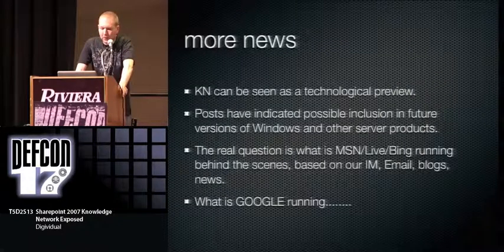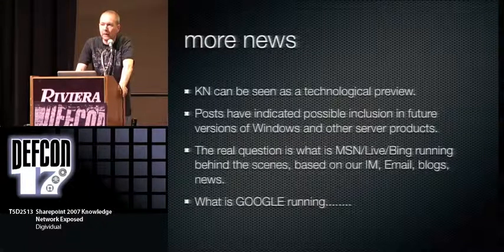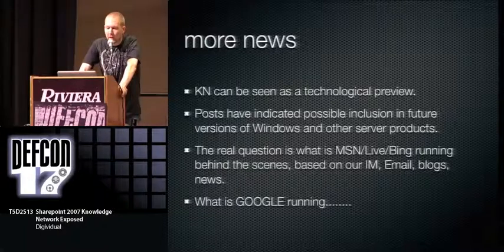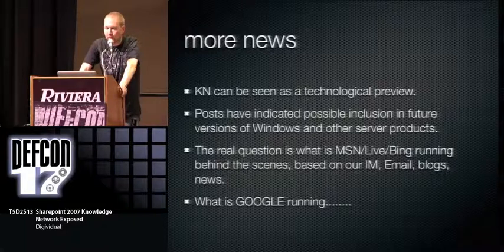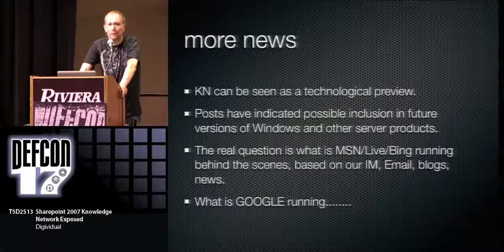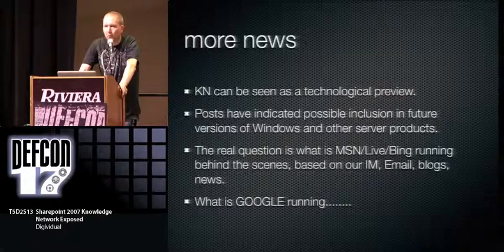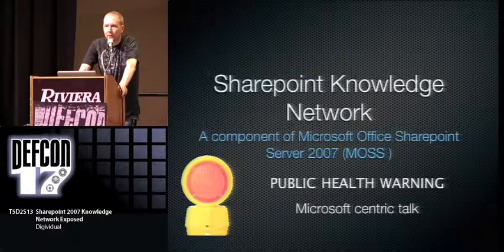The Knowledge Network can be seen as a technology preview — it was pulled, and they never explained why, despite having many large customers who were very interested in it. It is indicated it will be included in new versions. Since they have this product and it's pretty much done, I'm wondering if they don't have a much better version running behind Bing to mine all the data they're collecting through Hotmail — or Bing Mail, whatever it is now. And the bigger question is what Google is running behind the scenes on all the data and ad tracking that they have.